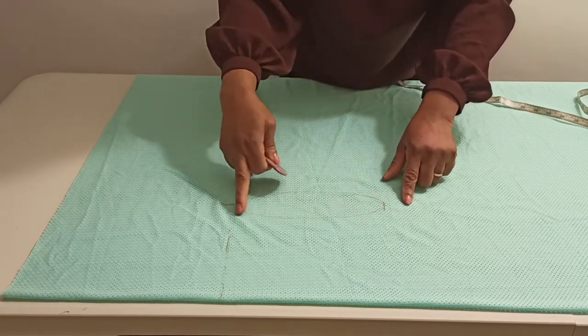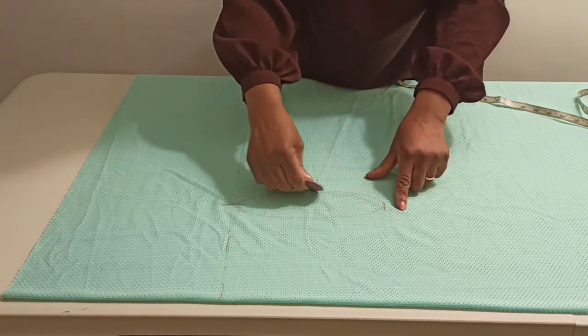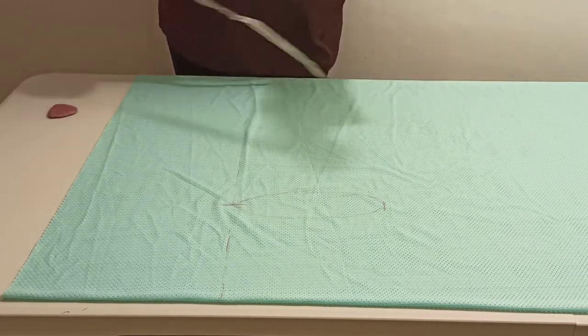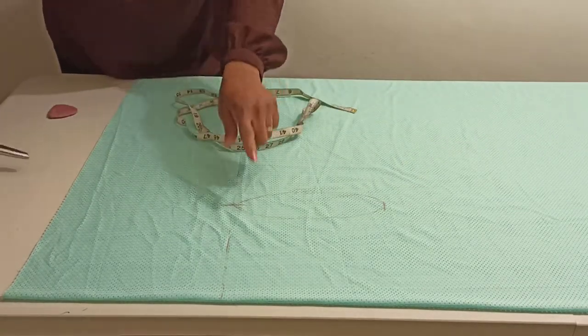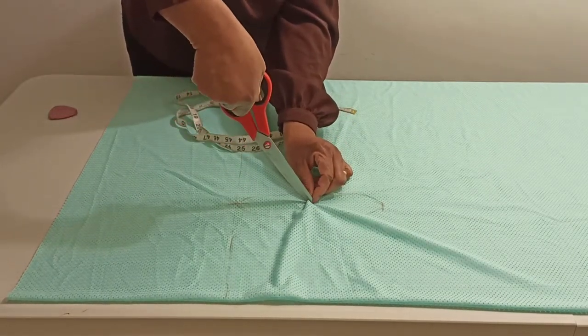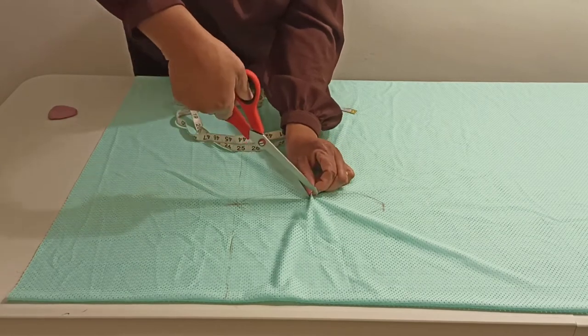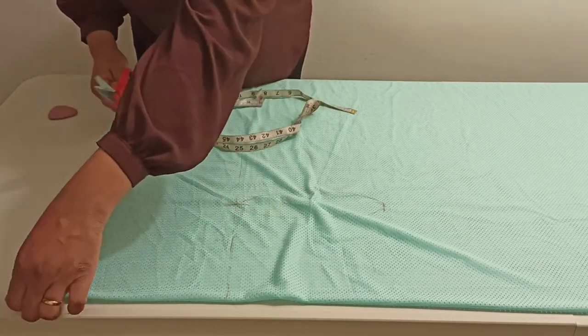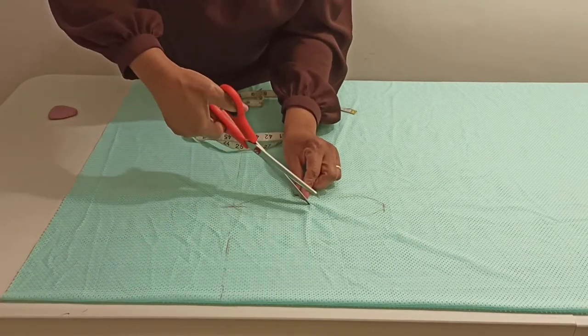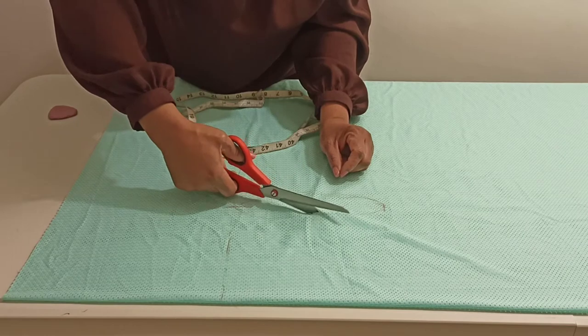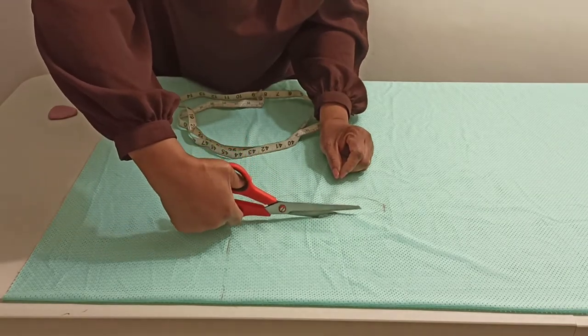Once you do that, you want to take your scissors and cut it in the middle like that so it's easy for you to cut your armhole. Give it a cut like that and you want to start cutting it all the way around.